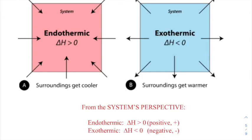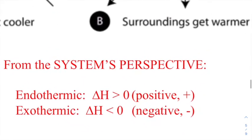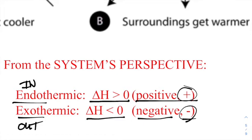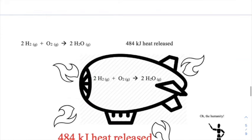We almost always want to look at things from the system's perspective. If we can't, we look from the surroundings' perspective and infer what's happening in the system. From the system's perspective: if it is endothermic, delta H is greater than zero — positive — because endo means in. If it is exothermic, delta H is less than zero — a negative number — because heat is going out.